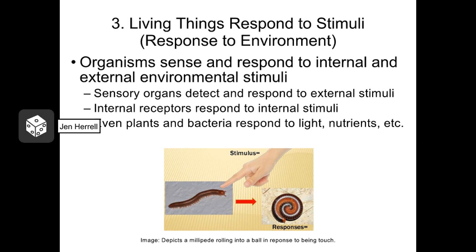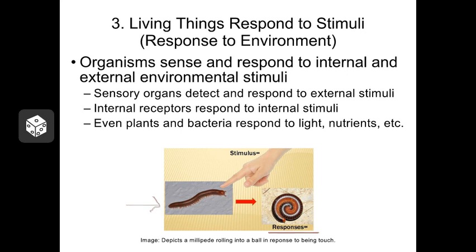Third, all living things have to be able to respond to stimuli — to respond to the environment — in order to stay alive. This can be on the whole organism level; for instance, if you poke a millipede, its response will sometimes be to curl up into a little ball to protect itself. Or this can be internal on the biochemical level; for instance, if you rub a plant leaf, there are certain biochemical reactions that are going to happen inside that leaf as the plant tries to defend itself. Being able to respond to the environment is one of the key characteristics of living things.